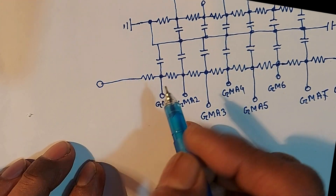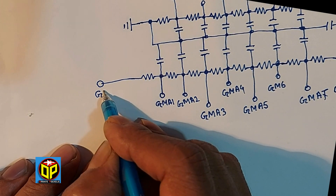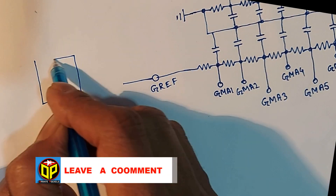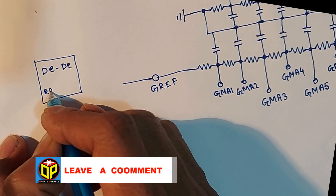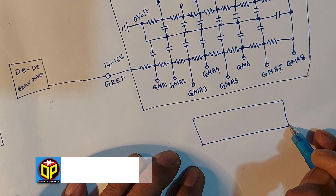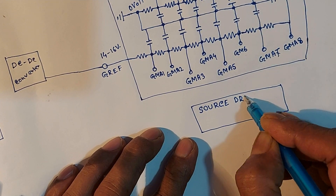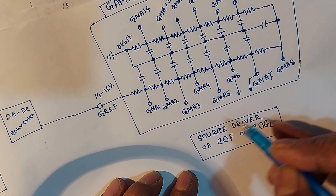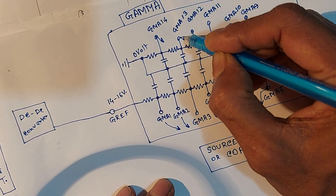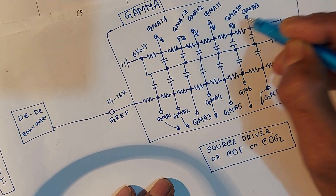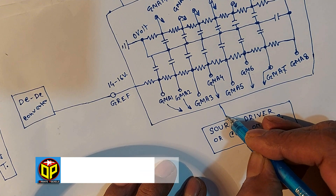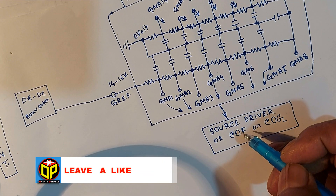This is the GREF or gamma reference voltage supply terminal. From the DC-to-DC circuit, gamma reference voltage is supplied. Try to understand — this is the source COG. Different types of gamma voltages are used in the source COG circuit to control the gain of the video signal. That is why gamma voltages are supplied to this COG.